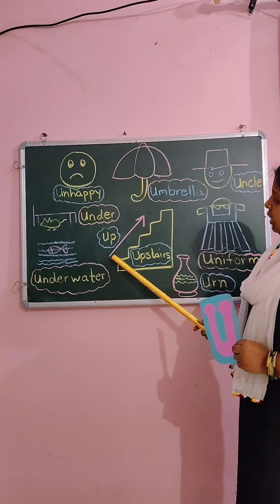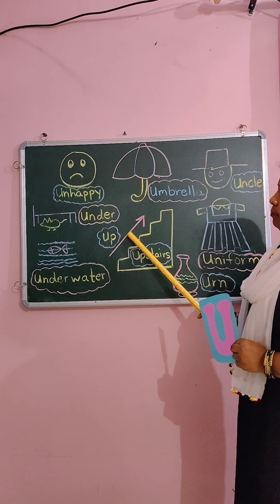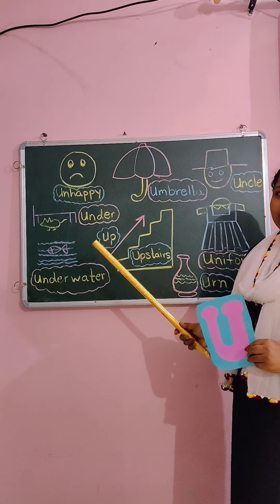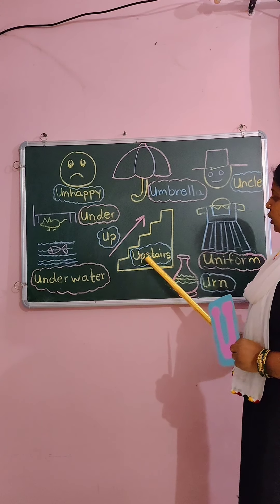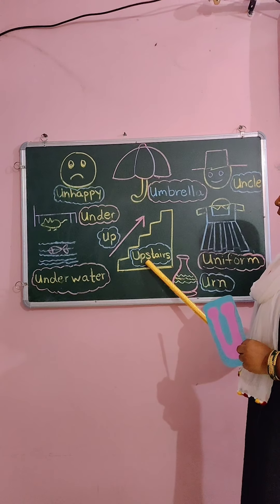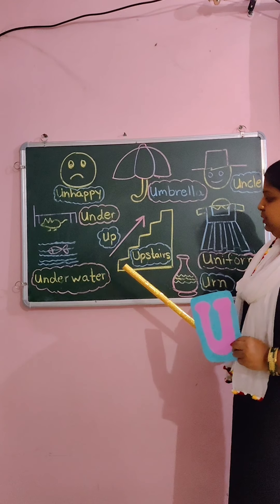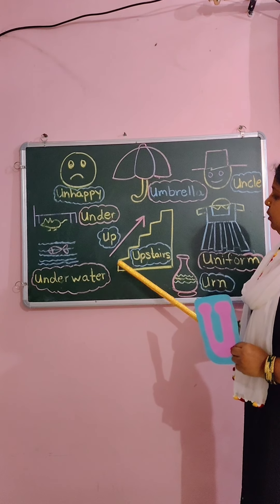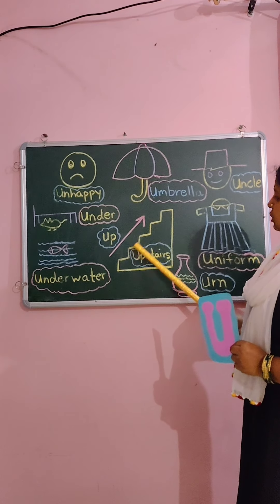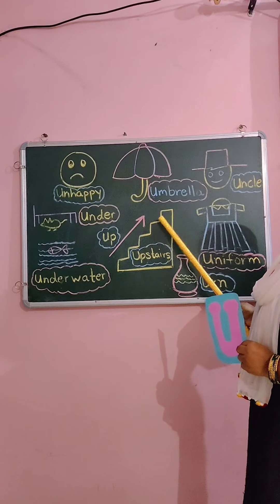U for up. See the arrow? It is going up. Up means oopar jaana. U for upstairs. Upstairs means seerhiyaan. Jis pe chad ke hum oopar jaate hai.